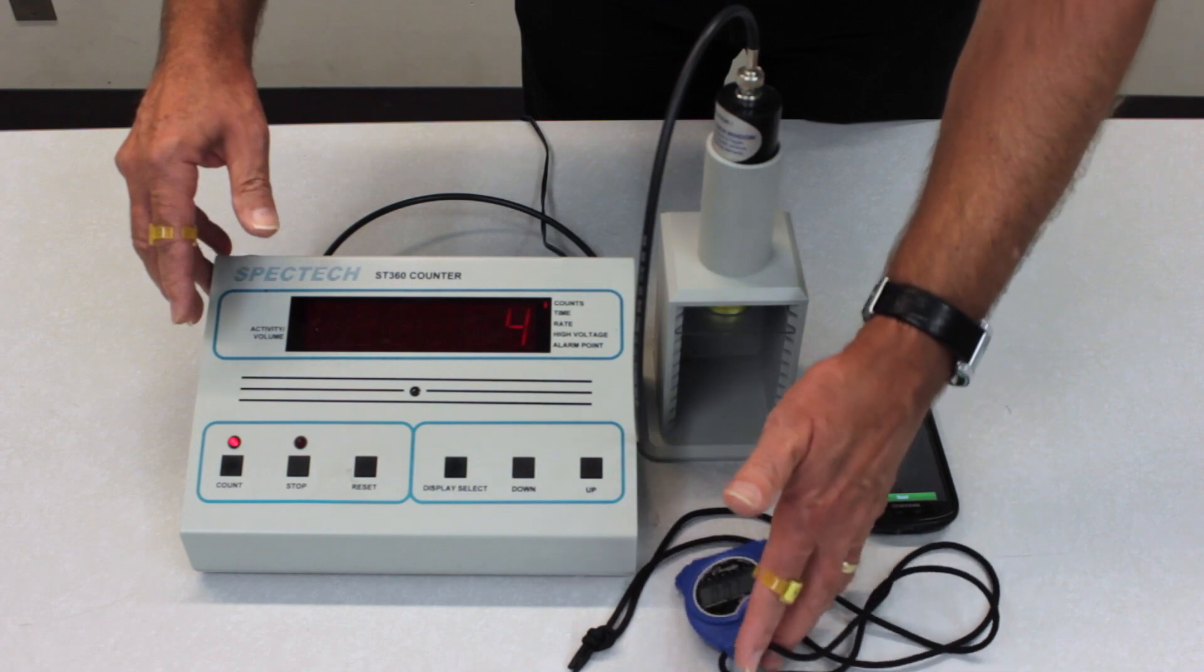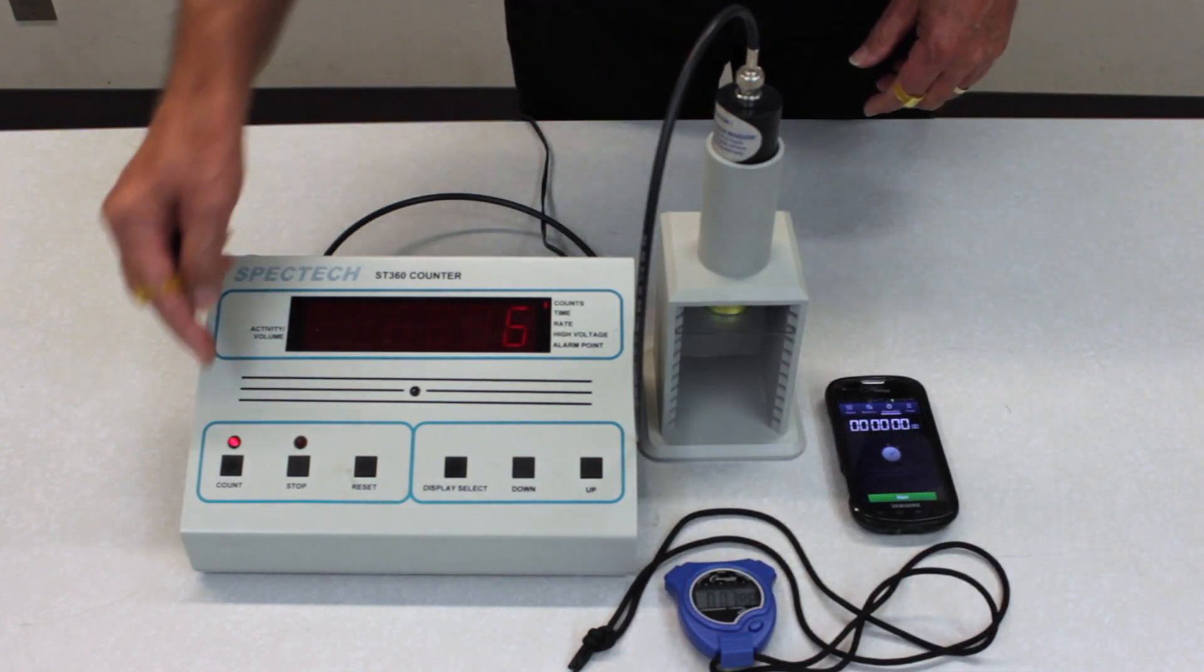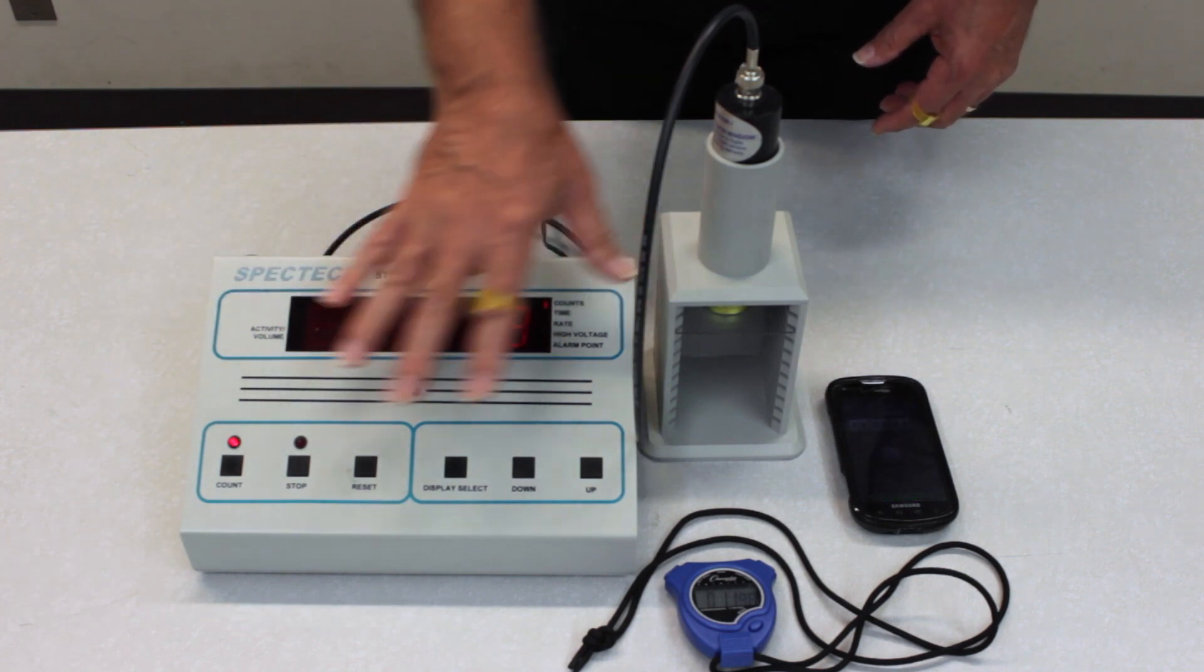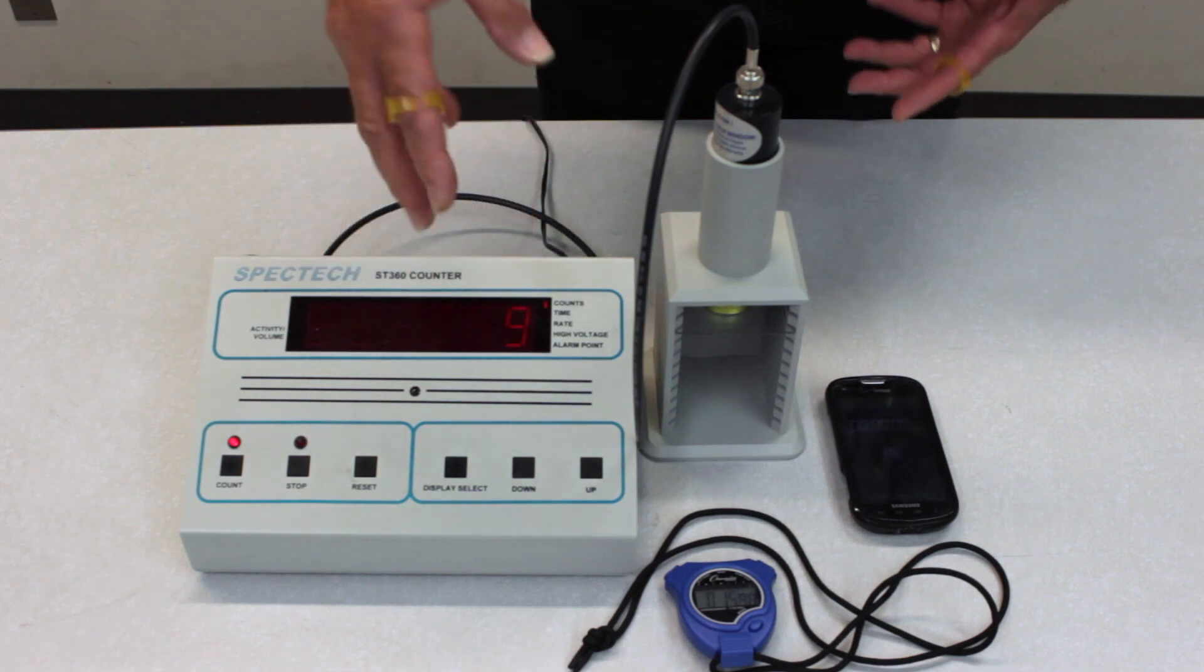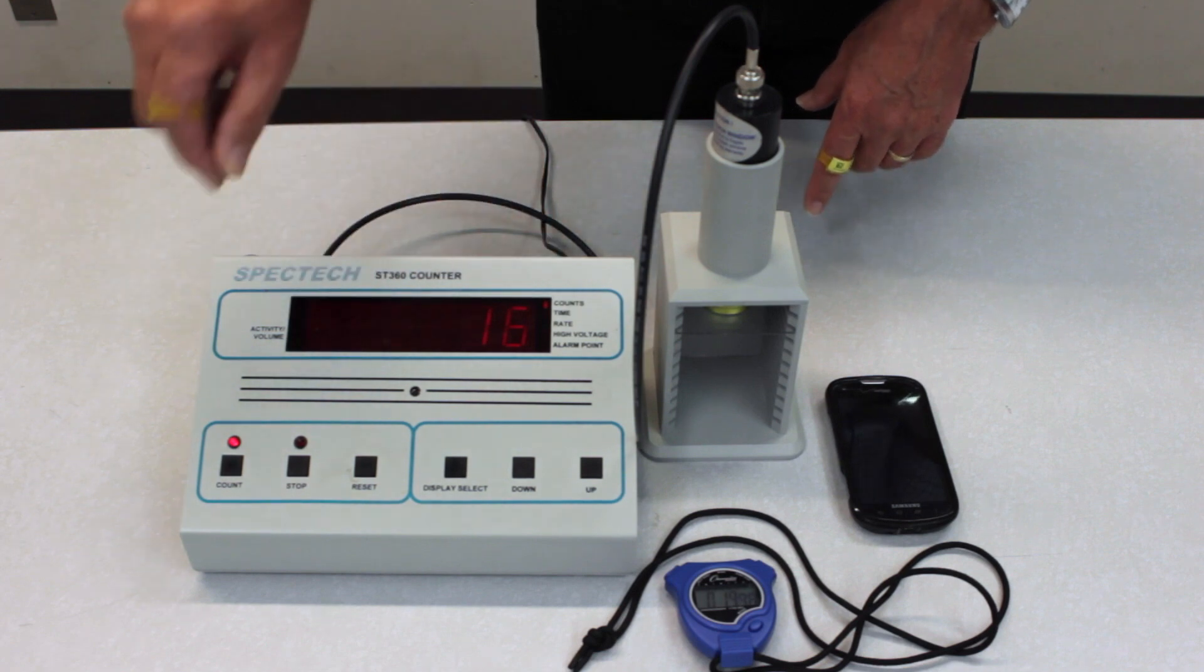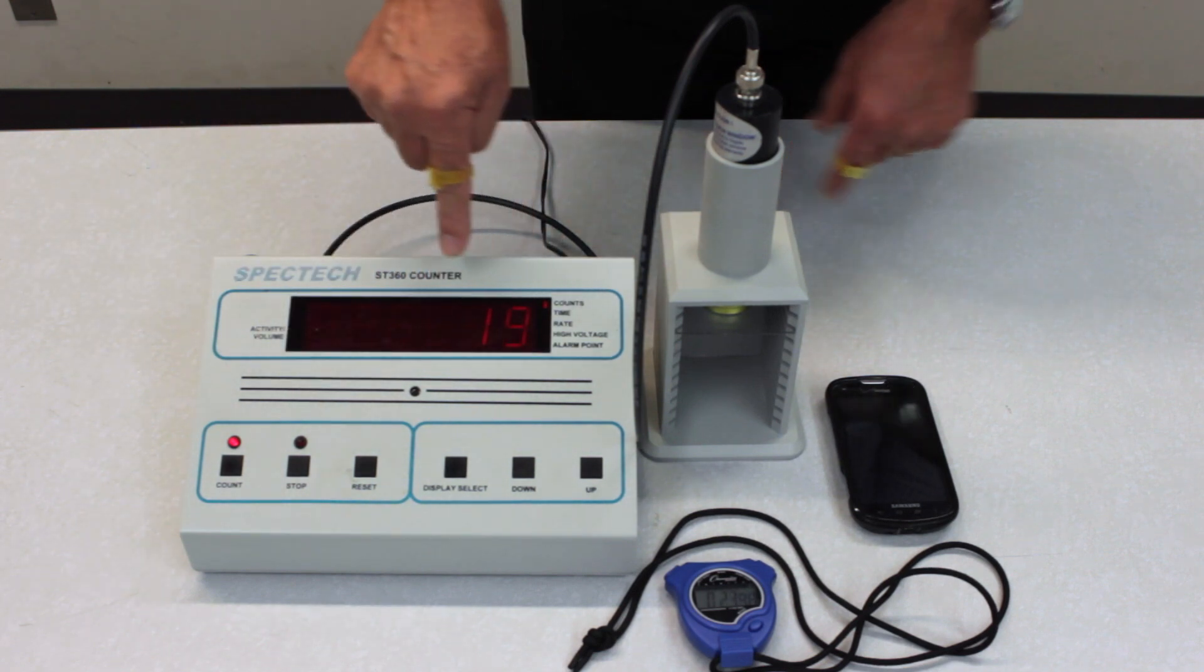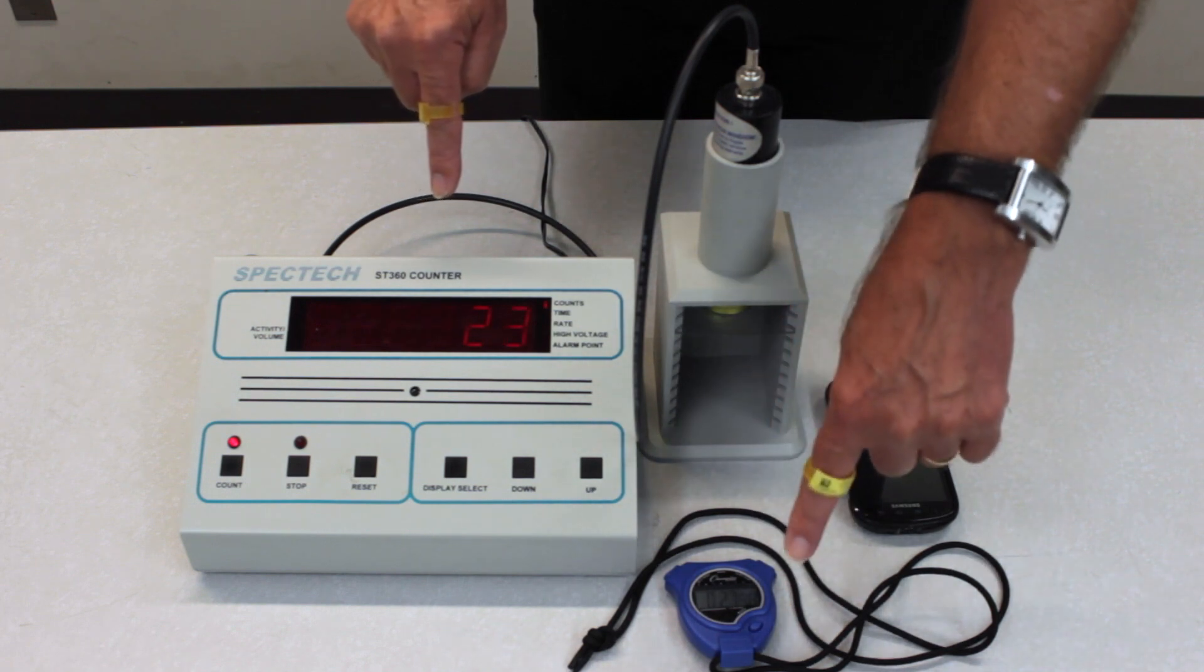Leave the stopwatch running continuously, don't reset the stopwatch, but allow the instrument to count the number of counts in the preset time interval of 300 seconds. This will stop when the counting interval is completed. Just record the data and then reset the counter to zero, but don't reset the stopwatch. Continue to let the stopwatch run.